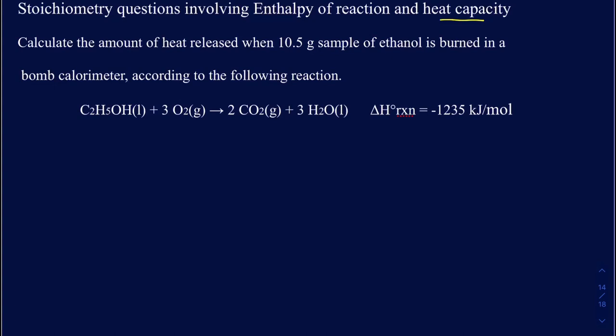Now, the question reads, calculate the amount of heat released. So when it says heat released, what type of reaction would that be? Well, it's going to be an exothermic reaction because that's when you release the heat. When 10.5 grams of sample of ethanol is burned in a bomb calorimetry, so the bomb calorimetry is when you do the reactions at a constant volume, so there's no change in the volume. According to the following reaction,